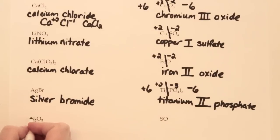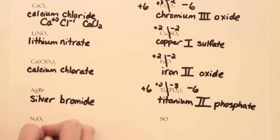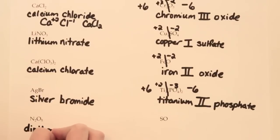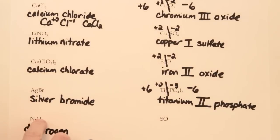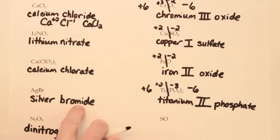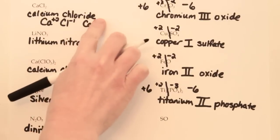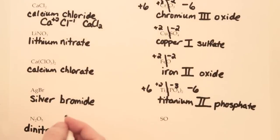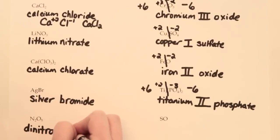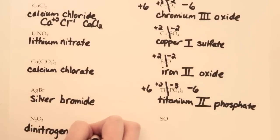For the first example we've got two N's — the prefix for two is di — so we say dinitrogen. For the second nonmetal in a covalent compound, it always gets an -ide ending, just like bromide, chloride, or oxide. We put a prefix on to say how many there are. Five oxygens would be called pentoxide.